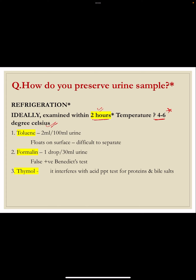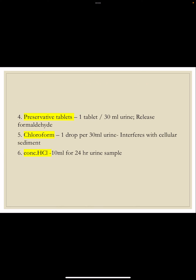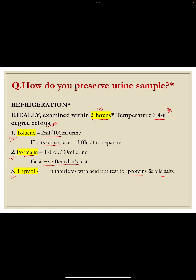Chemical preservatives can also be used for urine preservation. These include: toluene — but it floats on the surface of urine; formalin — but it gives a false positive Benedict's test for reducing sugar; thymol — but it interferes with the heat coagulation test for protein and with bile salts; preservative tablets containing formaldehyde; chloroform — one drop per 30 ml of urine; and concentrated HCl (hydrochloric acid) — but it hampers cytology. You should remember the names of these preservatives.